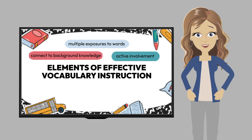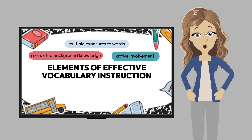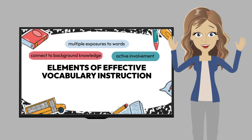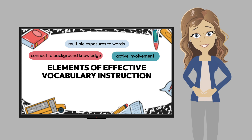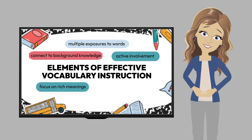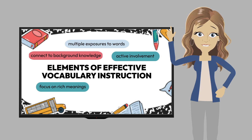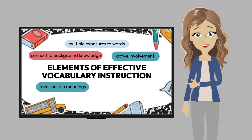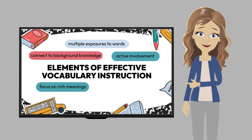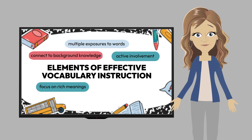Active involvement is the third element and underscores the need to provide children with opportunities to become actively involved in using a new word and concept in context — they need to be pushed to play with the word. When working with words, it is important that we focus on rich meanings. We do this when we expand our exploration of the meaning of the word beyond a definition to include learning about synonyms, antonyms, parts of speech, classifications, comparisons, real life examples, graphic versions, etc. We need to really expose them to the word.